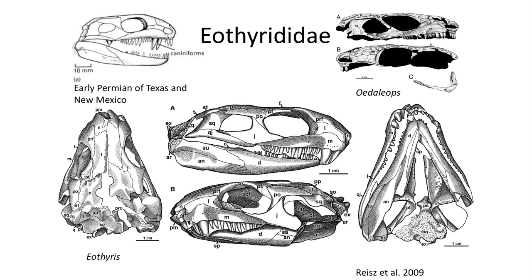The early fossil Eothyris features a single temporal fenestra between the jugal, squamosal, and post-orbital bones in the skull. The teeth are long, sharp, and jagged, suggesting a carnivore diet of insects and other smaller tetrapods. The bones in the skull compare with the earliest amniotes, including having postparietal, pre- and postfrontal, temporal, and supratemporal bones, as well as a large pineal opening on the top of the skull.